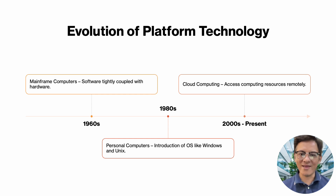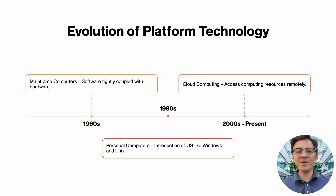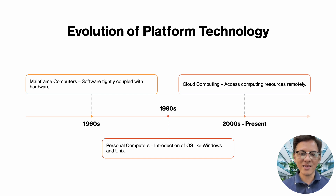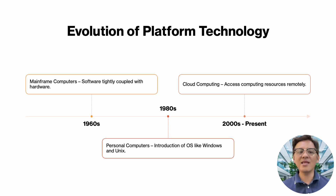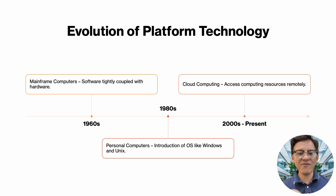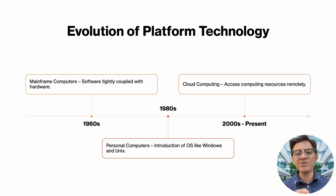Fast forward to the 2000s, and we witnessed another major shift — the rise of cloud computing. In the past, companies had to buy expensive servers to host their applications. But cloud platforms like AWS and Google Cloud changed the game. Instead of maintaining costly infrastructure, businesses could now rent computing resources on demand, paying only for what they used. This shift didn't just make computing cheaper; it made it scalable, flexible, and accessible to businesses of all sizes. We can see that platform technology has transformed from rigid hardware-bound systems to flexible, scalable, cloud-driven environments that power the digital world we live in today.